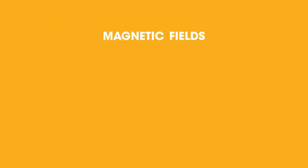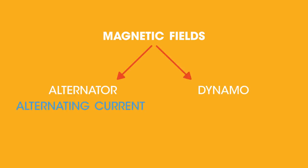In this video, we're going to look at how a change in magnetic field is used by an alternator to generate an alternating current, and a dynamo to generate a direct current. That's pretty easy to remember: A for alternator and alternating current, and D for dynamo and direct current.